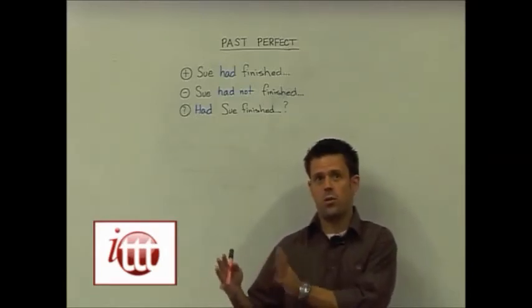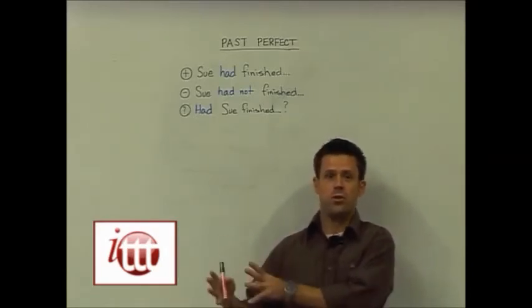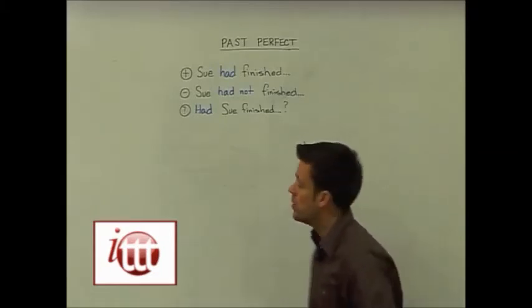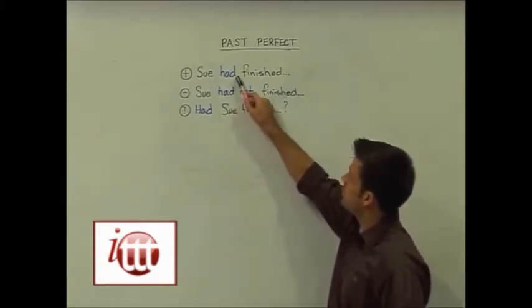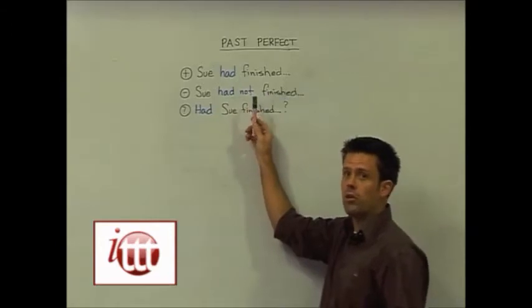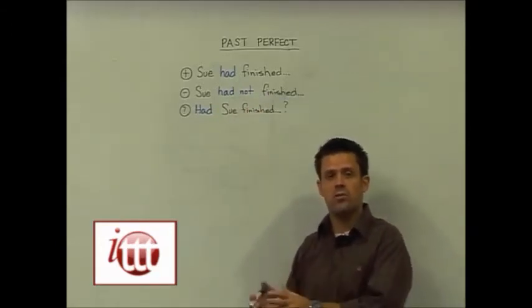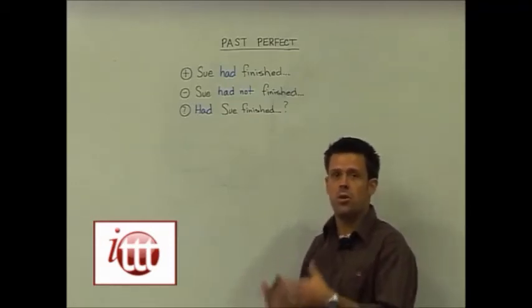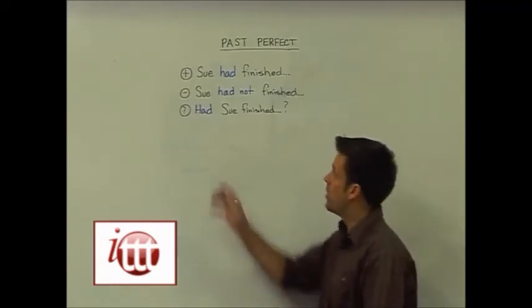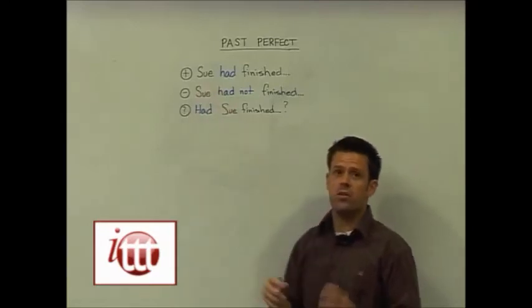In this case, we're relating two past actions to each other. We do so by using the auxiliary verb, again the helping verb to have, but because we're talking about the past, we conjugate that helping verb into the past. So we'll consistently use had no matter what our subject is for the sentence.